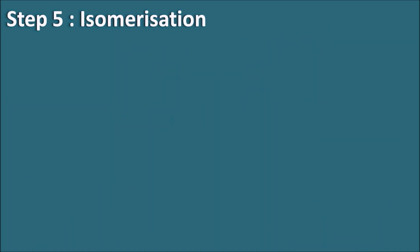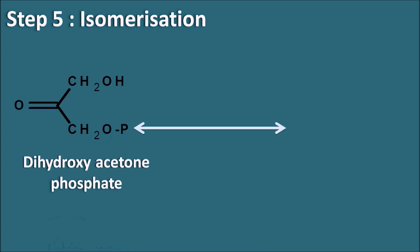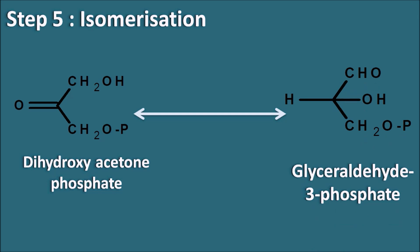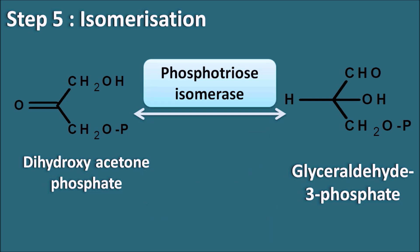Step 5 is isomerization. Two C3 molecules are formed, but only one — glyceraldehyde-3-phosphate — proceeds in the next steps. So dihydroxyacetone phosphate is converted into glyceraldehyde-3-phosphate by a simple isomerization reaction. Since the reactant is a phosphotriose, the enzyme is phosphotriose isomerase. This is the last step of the preparatory phase, and glucose has now been converted into glyceraldehyde-3-phosphate.